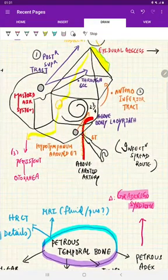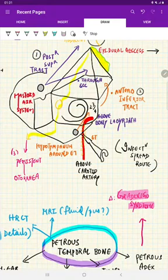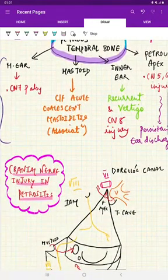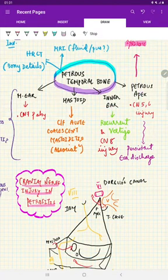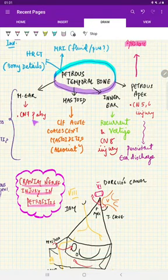A person with Gradenigo syndrome doesn't always present with all features. Coming to clinical features: middle ear, mastoid, inner ear, and petrous apex are all affected.